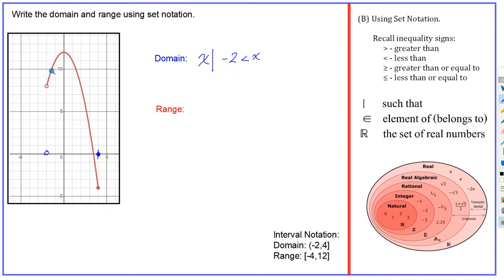Reading it backwards: x has to be greater than minus two, which is true — x has to be greater than minus two up until the upper boundary, which is positive four for the x-value. That point is included because it's solid, so it's less than or equal to positive four. That's our inequality describing the x-values: anything above minus two up to and including four. Along the way, we're allowed to use any number — fractions, irrational numbers.